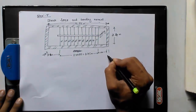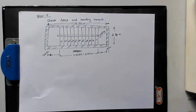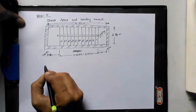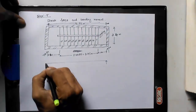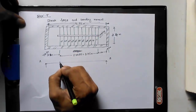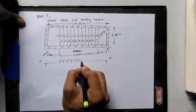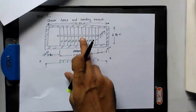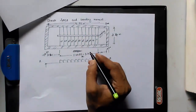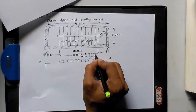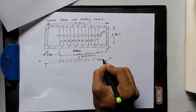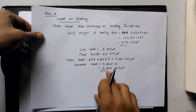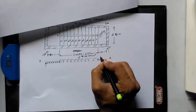Wall thickness is 0.3 meters on both sides. According to this data, we need to draw a beam from center of one wall to center of the other wall — from point A to point B. Here we have one UDL, the factored load on steps which is 14.62 kN/m², and the load on landing which is 10.875 kN/m².